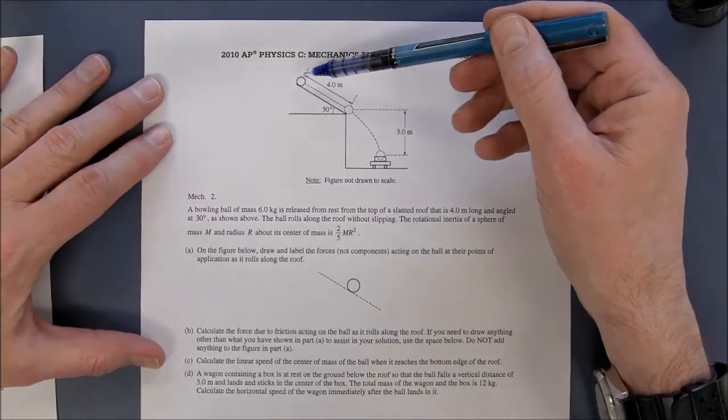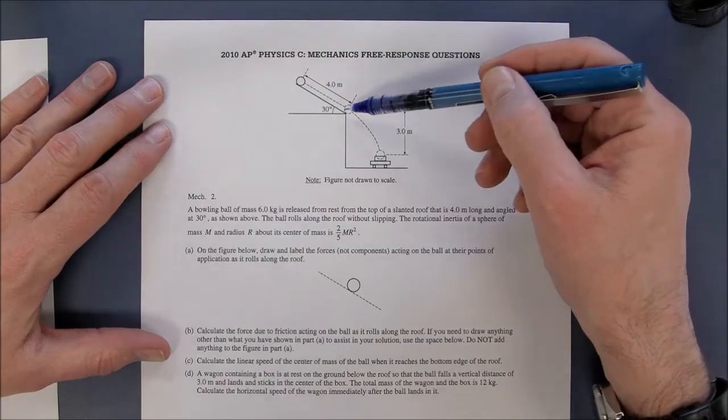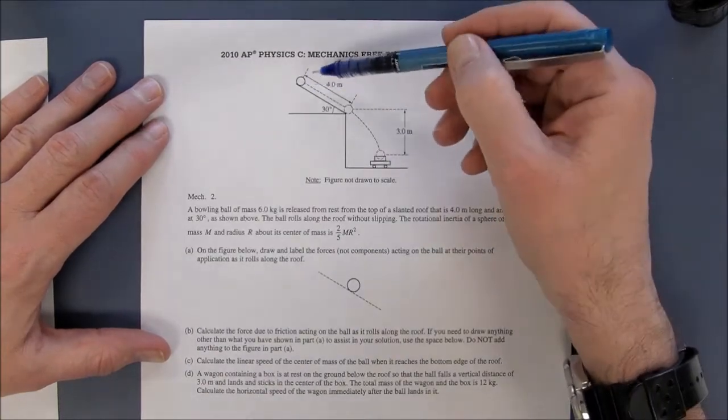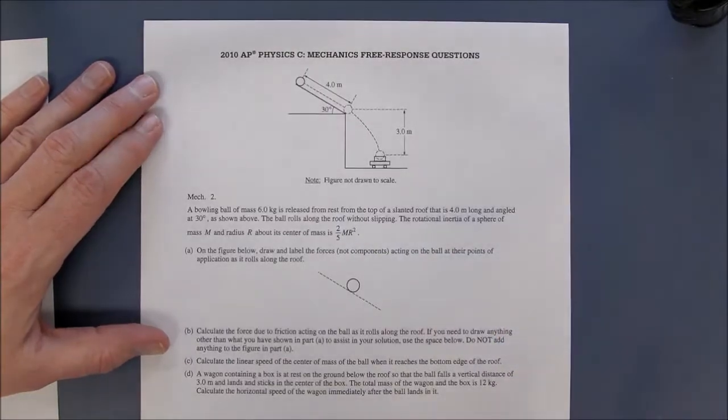The idea is the ball is rolling down this inclined plane, the ball has a moment of inertia, it falls through the air and hits a cart. The question was really about the first two questions here, A and B, on the exam.